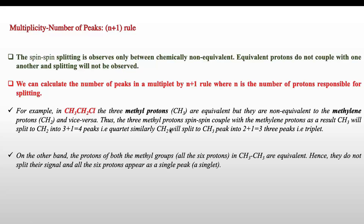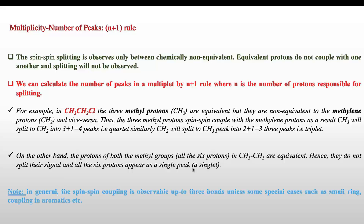On the other hand, all six protons of ethane (CH₃–CH₃) are equivalent and do not split each other's signals, so all six protons appear as a single peak. We must first identify chemically equivalent and non-equivalent protons — only chemically non-equivalent protons split each other's peaks. In general, spin-spin coupling is observable up to three bonds, unless there are special cases such as small ring coupling or aromatic systems.